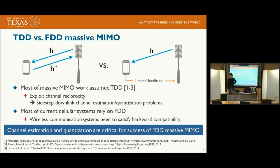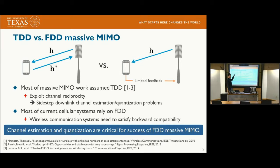Most Massive MIMO work assumes TDD, time-division duplexing, to exploit channel reciprocity and sidestep downlink channel estimation and quantization problems. In TDD, the base station can learn the downlink channel using the uplink pilot from the user because the channels are reciprocal.